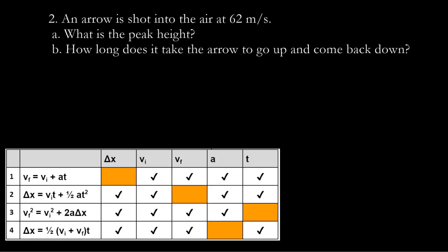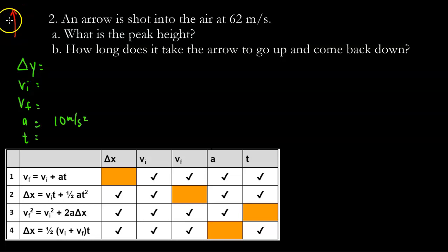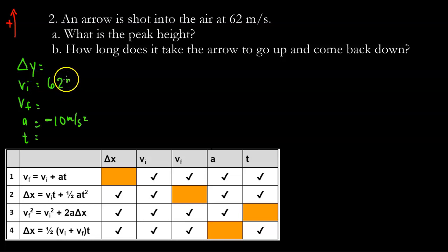Now let's look at another problem. This one's a bit different because we're throwing something into the air — an arrow shot up at 62 meters per second. What is the peak height? I'll start with my variables chart: delta y, vi, vf, a, and t. For freefall the acceleration is 10 meters per second squared. In this problem I'm going to make up positive — it's arbitrary, you can do it either way as long as you're consistent. If up is positive and acceleration is downward, then the acceleration is negative.